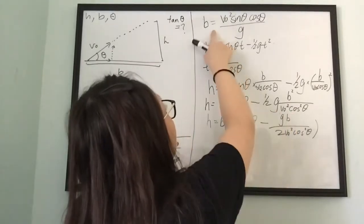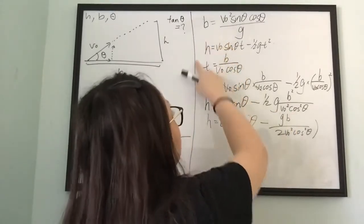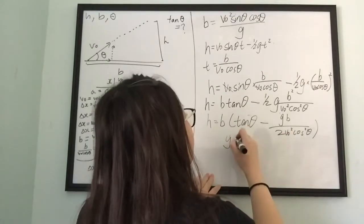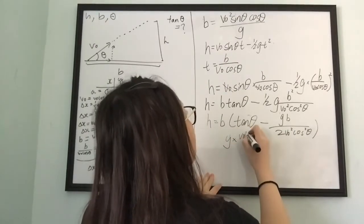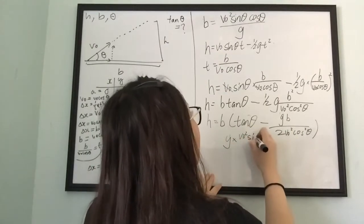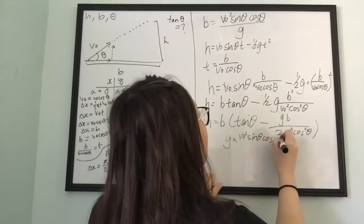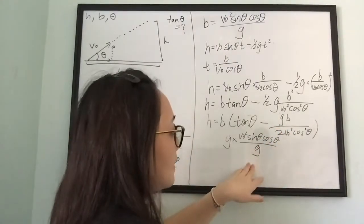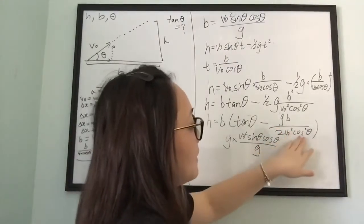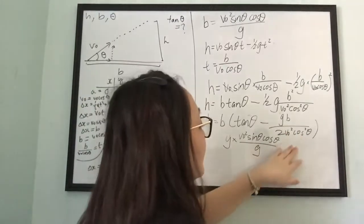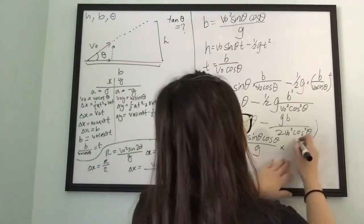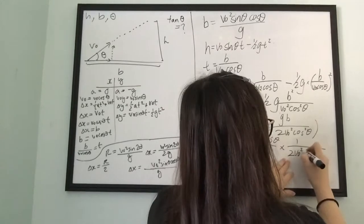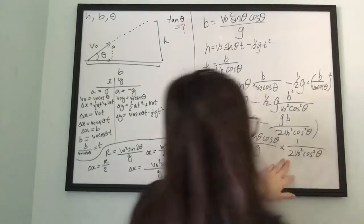For the gb term, substituting b equals v-naught²·sine(θ)·cosine(θ) over g, and multiplying by 1 over 2·v-naught²·cosine²(θ).